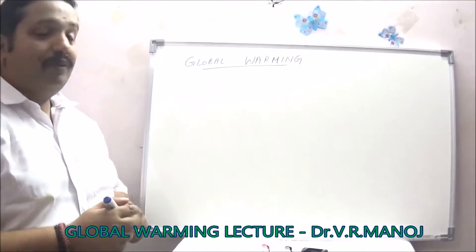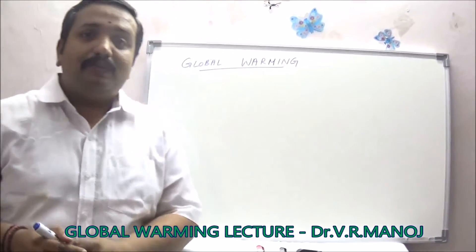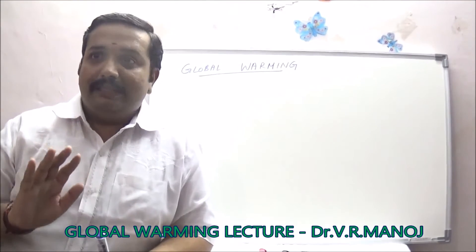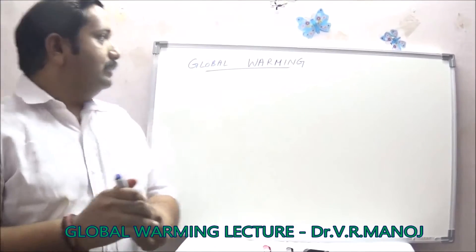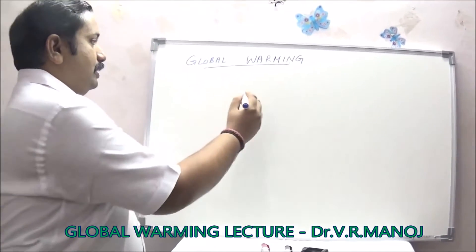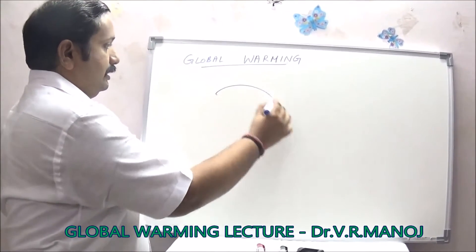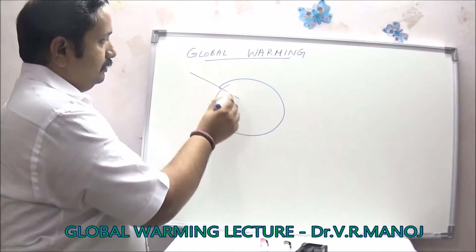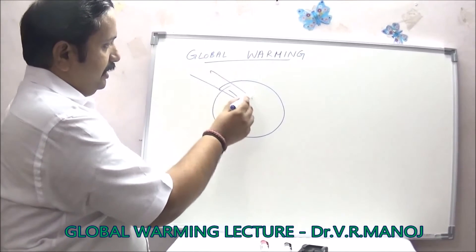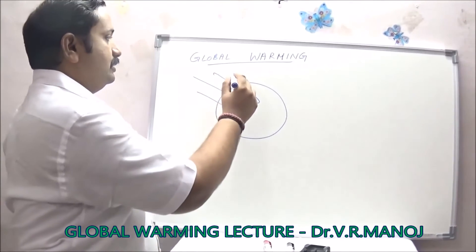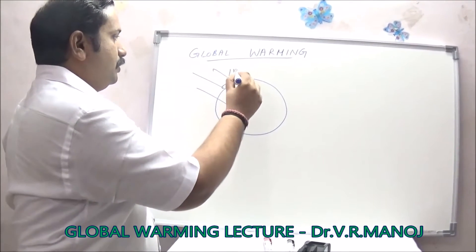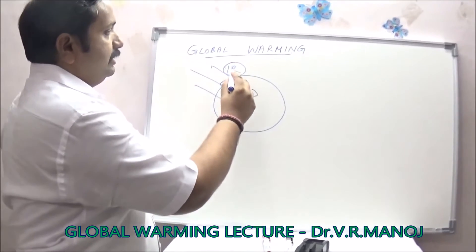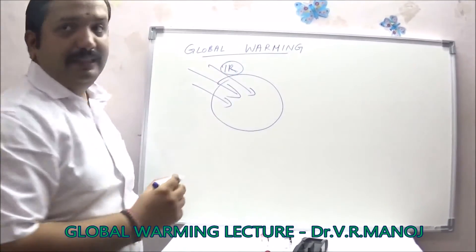So global warming — what is global warming? At the outset, what it means is you have the earth and you have sunlight coming in at different radiations. The most important of them is infrared radiation, or IR radiation.